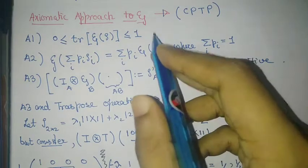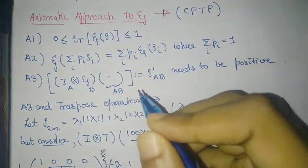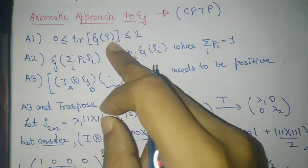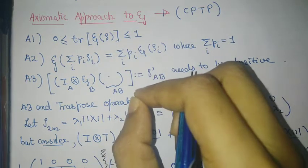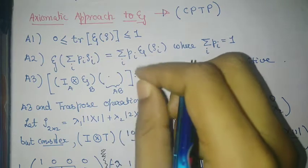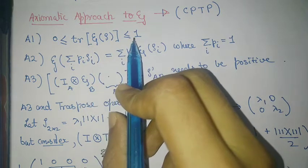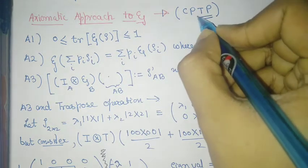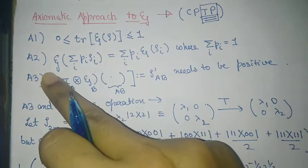Now we perform the axiomatic approach to quantum operations, denoted by ε. The first axiom is that the operation is a physical operation and must not increase the trace — it must keep the trace less than or equal to one, since probabilities cannot exceed one. It is strictly less than one whenever there is a measurement with generalized Kraus operators; it equals one (trace-preserving) when no measurement is performed on the system during the operation.